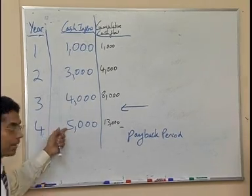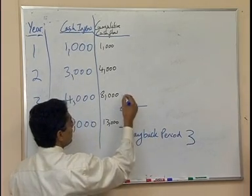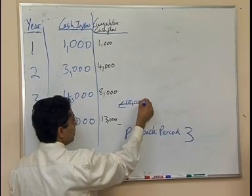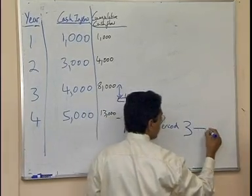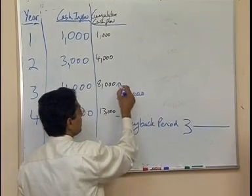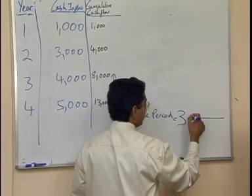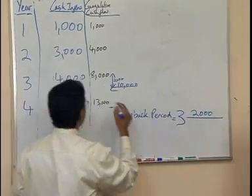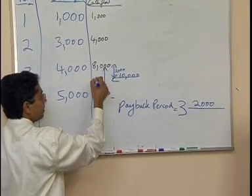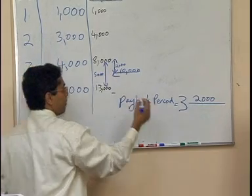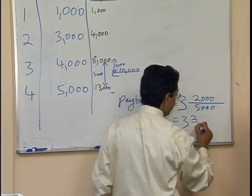To find the exact fraction, we know repayment occurs somewhere between year 3 and year 4. At the end of year 3 the cumulative cash flow is $8,000. The $10,000 target lies between $8,000 and $13,000. The gap from $8,000 to $10,000 is $2,000, and the total cash flow in that period is $5,000. So the fraction of the year is 2,000 over 5,000, giving a payback period of 3 and two-fifths years.